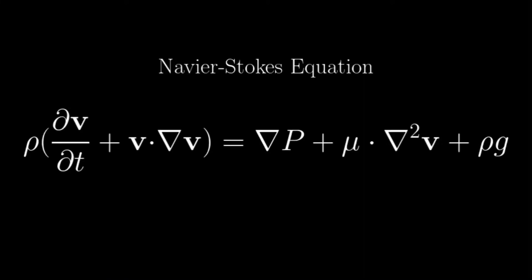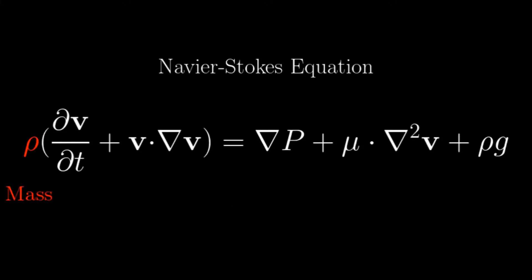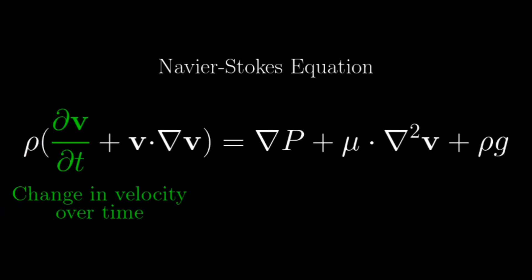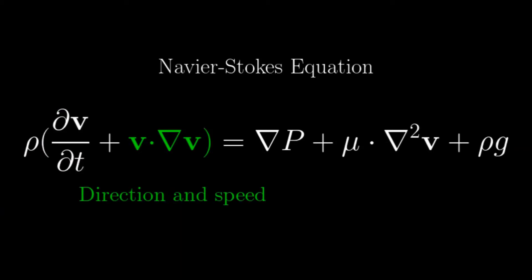This is the Navier-Stokes equation — well, there are multiple, but this is a simplified version. Even this compact version looks complicated, so let's go through each part. This equation is derived from Newton's second law: force equals mass times acceleration. The Greek letter rho at the front represents density, mass divided by volume — this is essentially our mass. The stuff in parentheses next to it compares the change in velocity over time and describes the fluid's direction and speed, overall giving us acceleration.